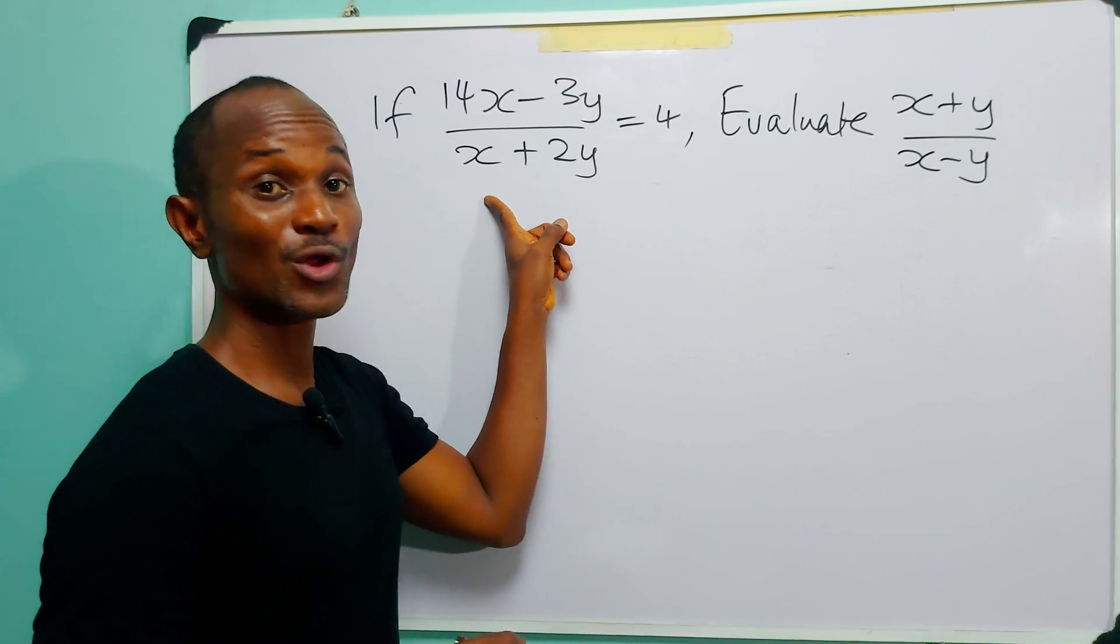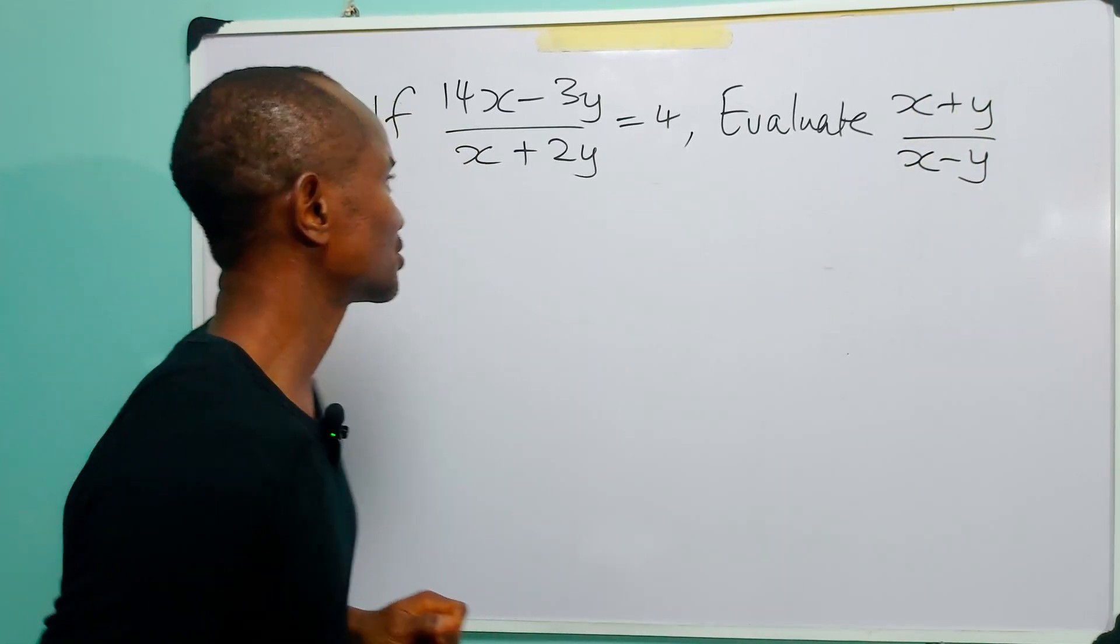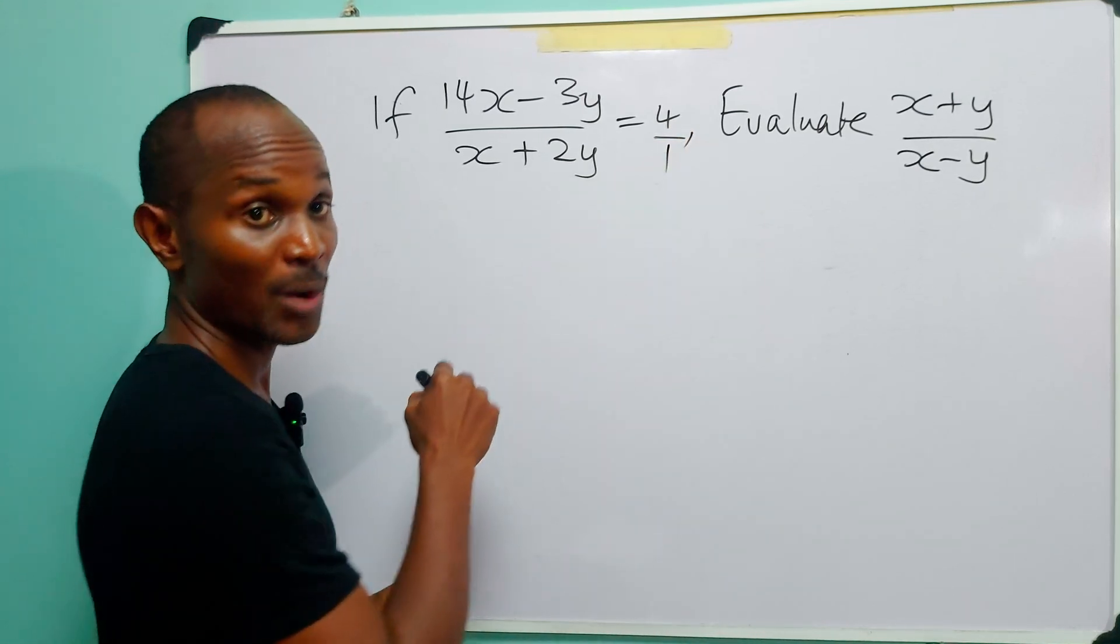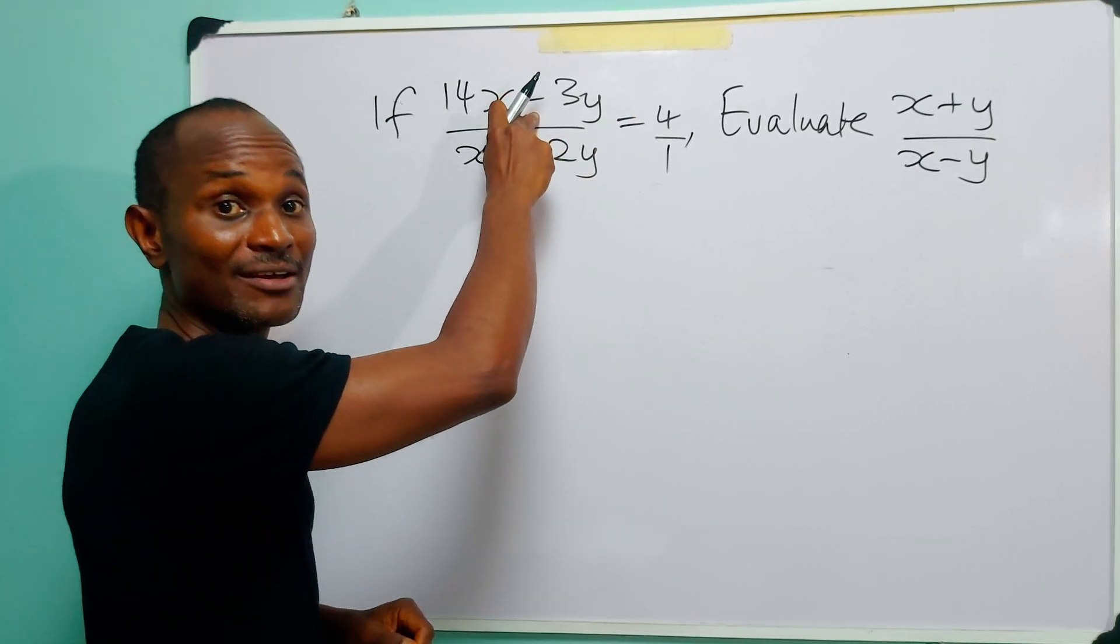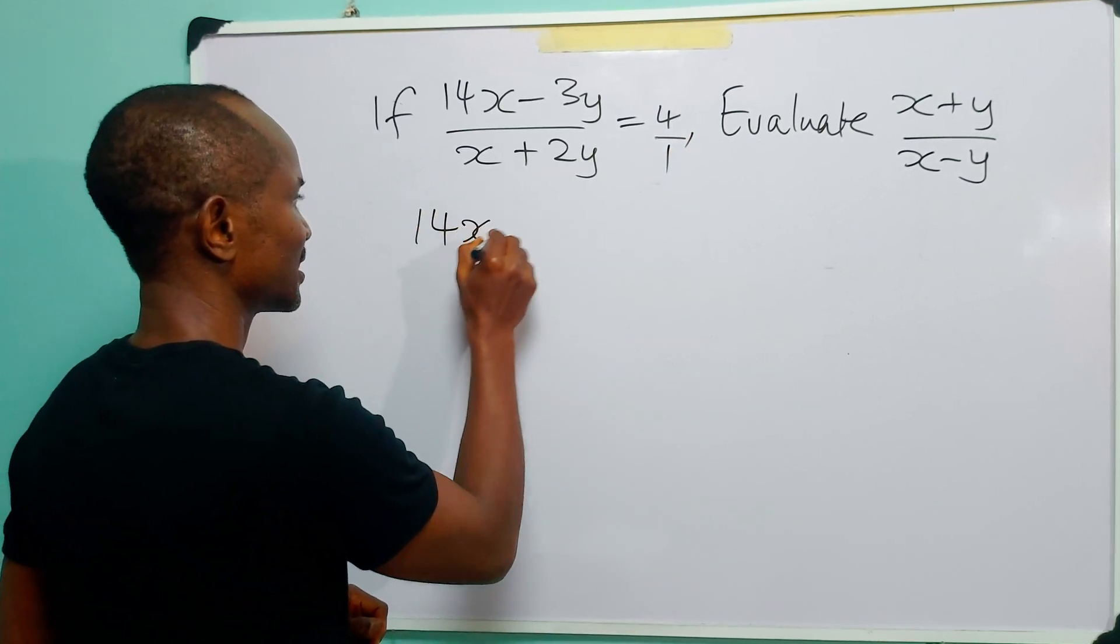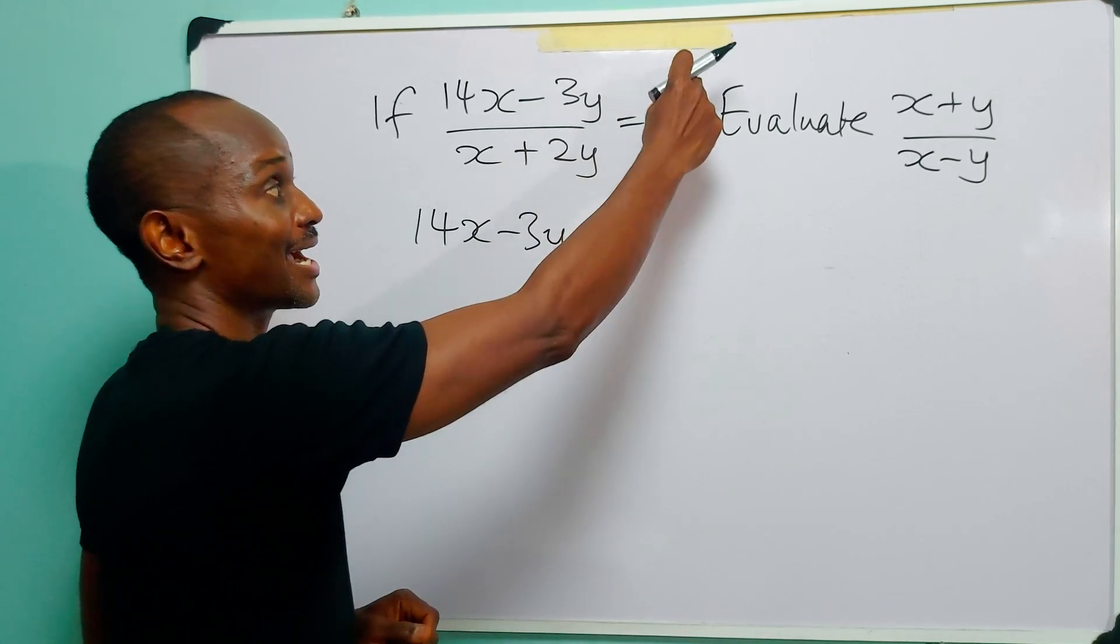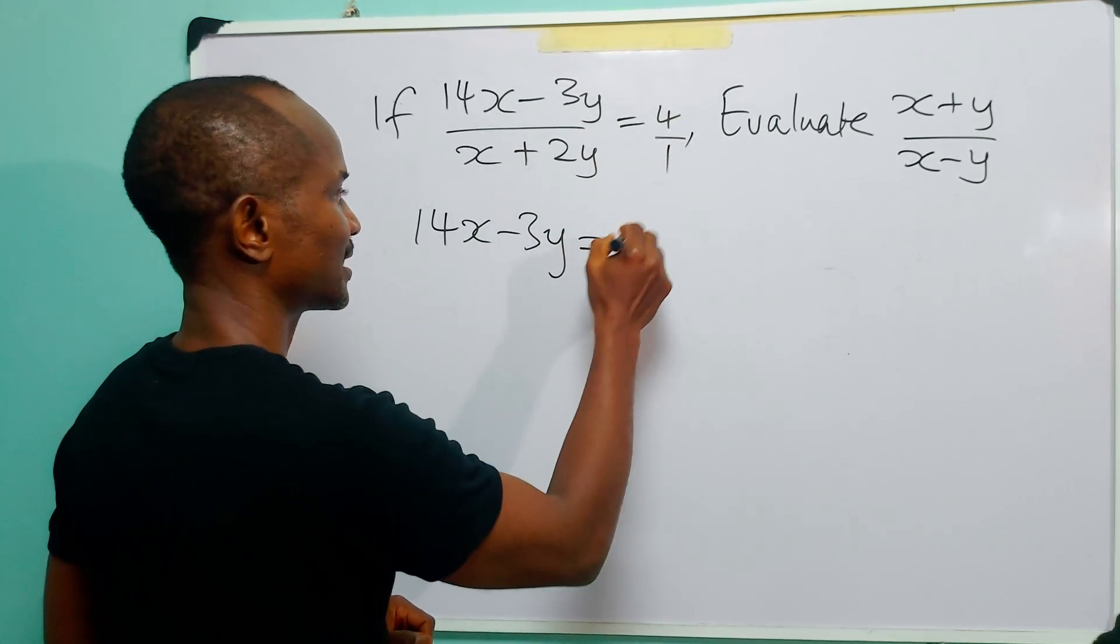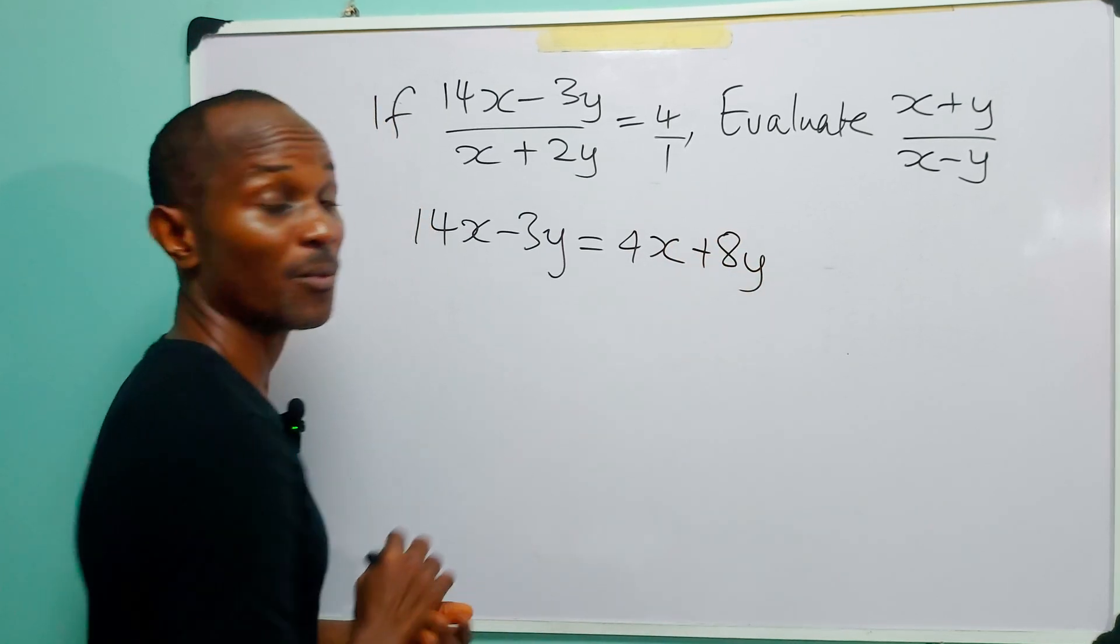In cases like this, you do not dare to calculate the values of x and y. This is what you do. Now this is over 1. You cross multiply. So we have 14x - 3y times 1, and of course that gives us 14x - 3y, and it's equal to (x + 2y) times 4. That is 4x + 8y.